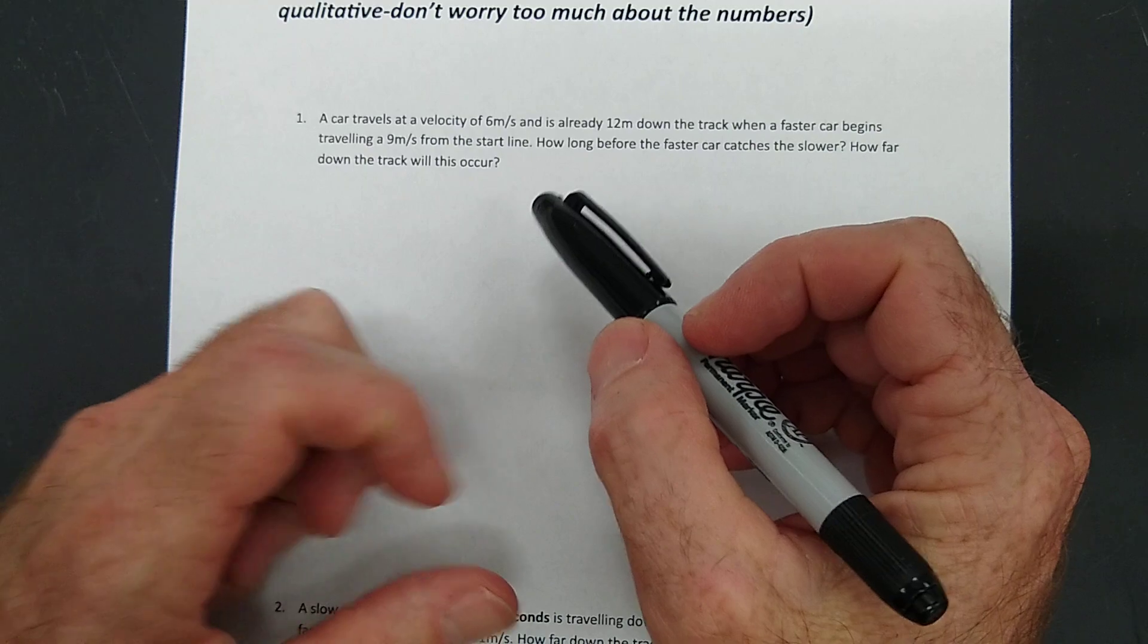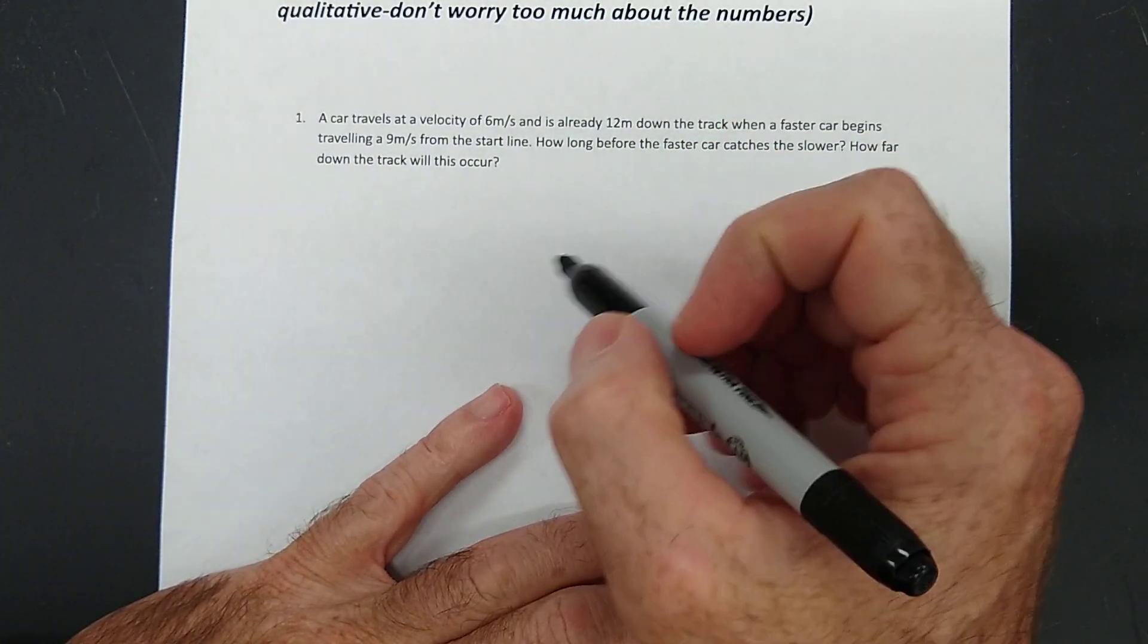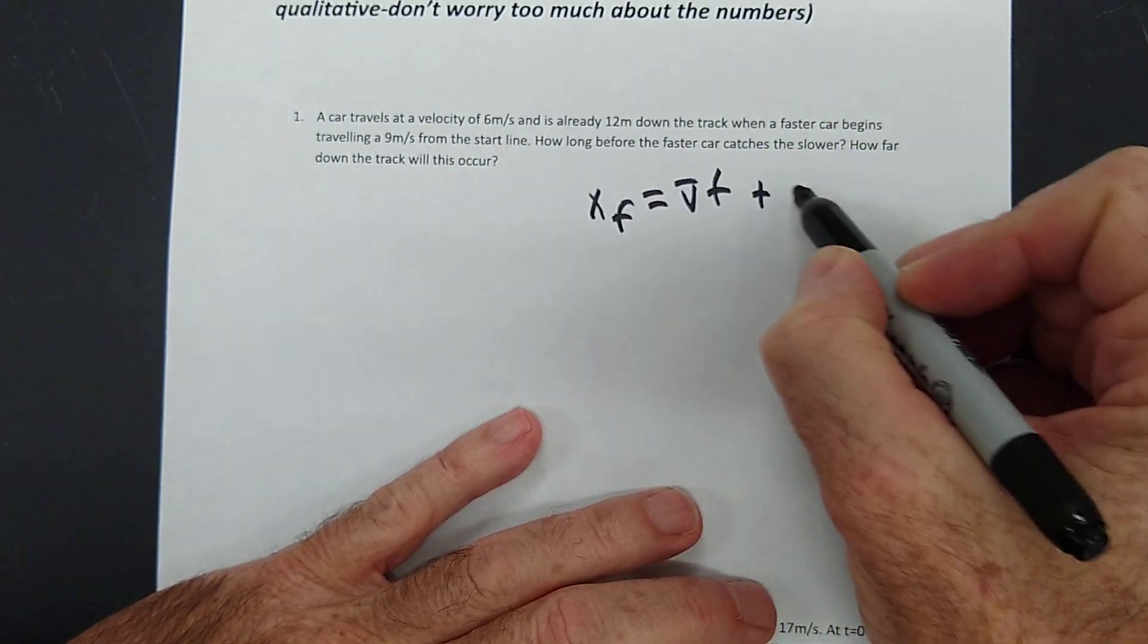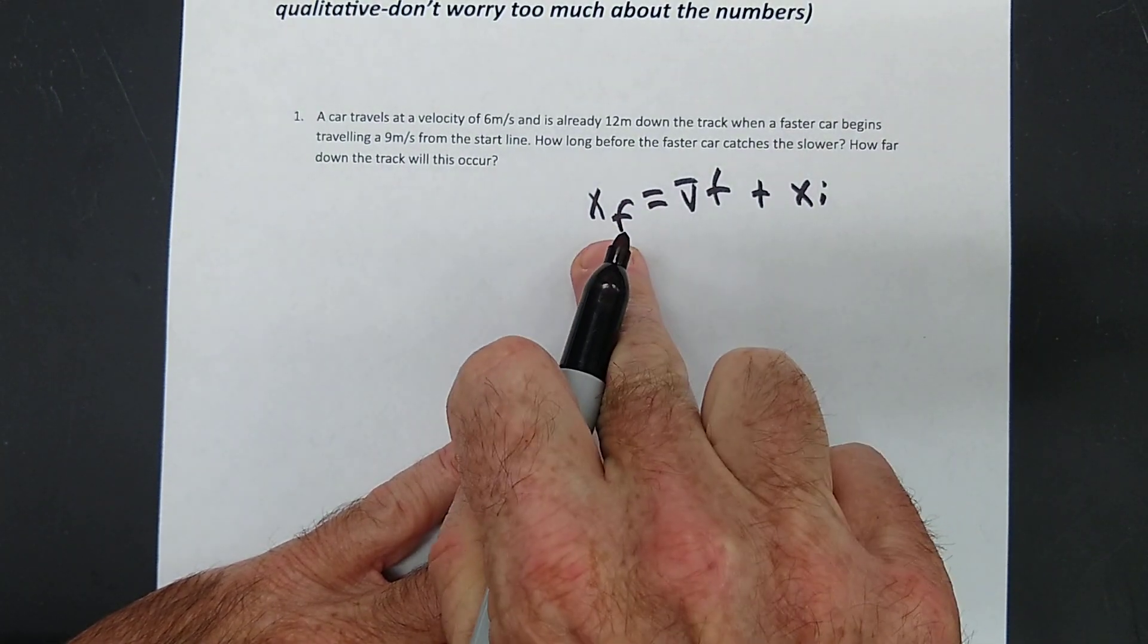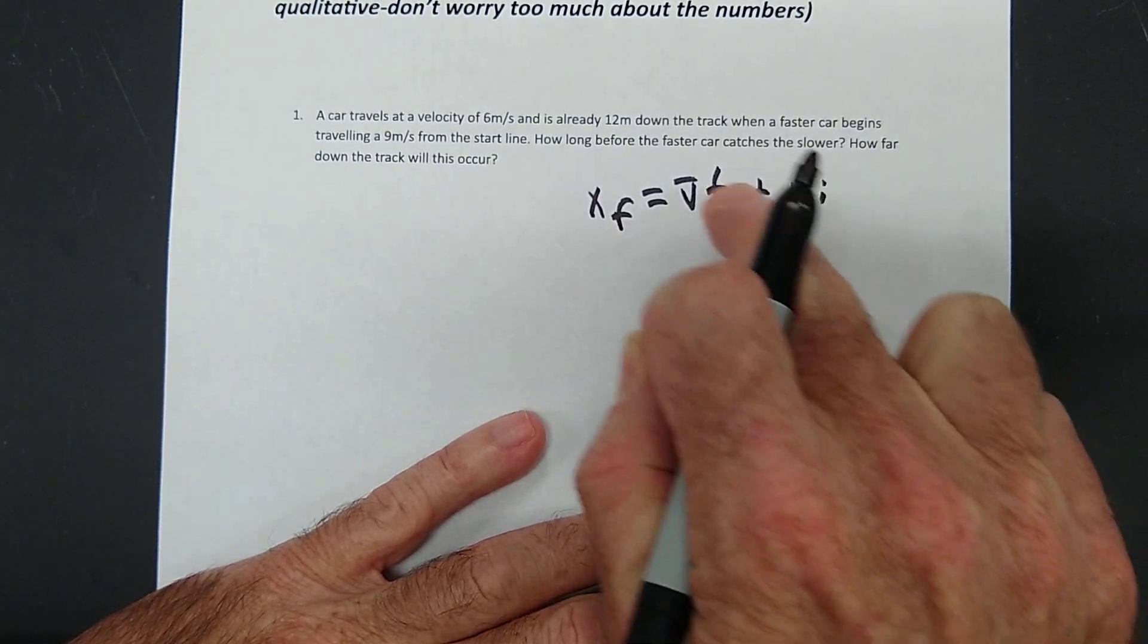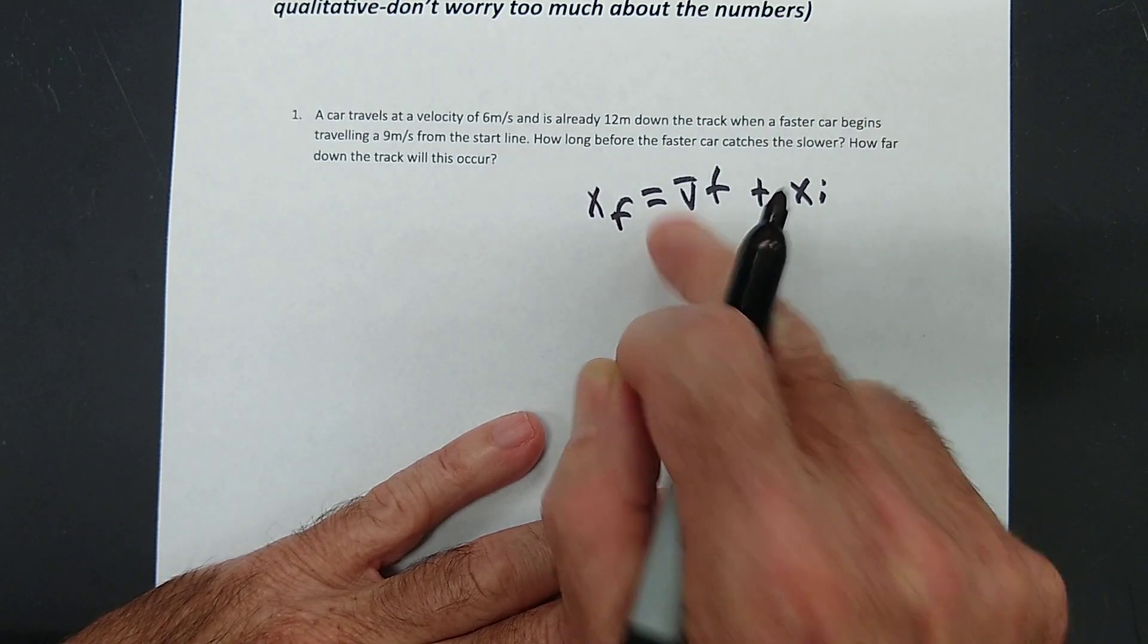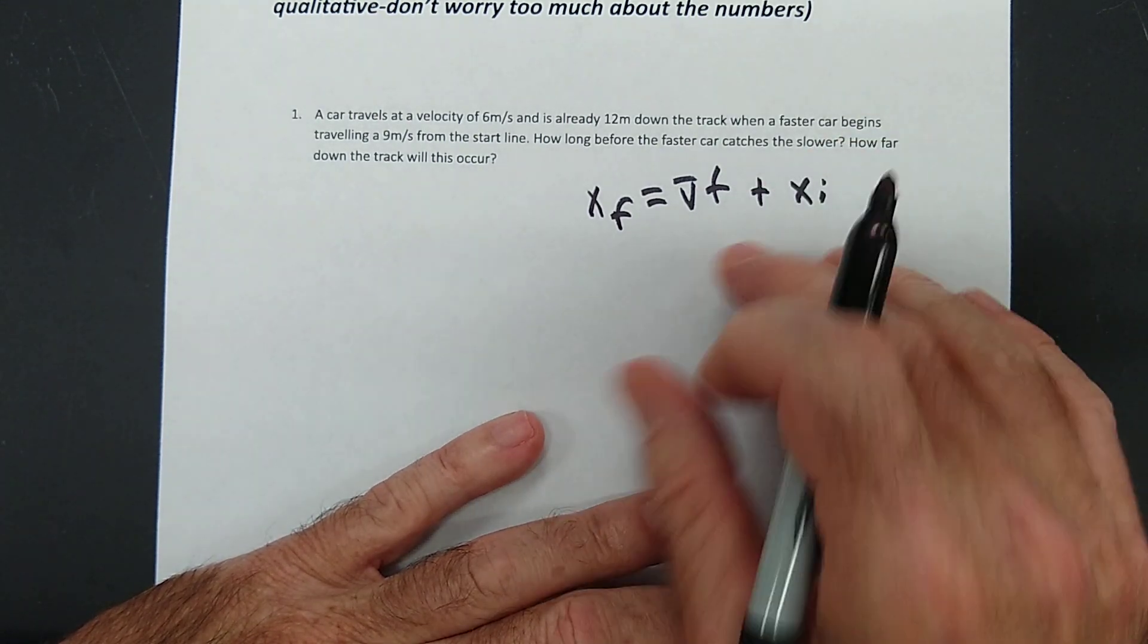Let's read this first problem. A car travels at a velocity of 6 meters per second. First of all, before we get started, here's our formula. XF equals VT plus XI. And you need to understand that this formula is really Y is equal to MX plus B. M is the slope of the line, and velocity is the slope of the line on a distance over time graph. The initial distance is also the Y intercept, so here we go.